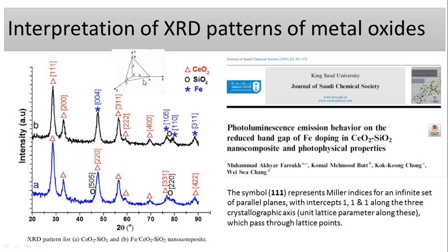The Miller indices represent the unit cell. This is the unit cell, and this is the central point of this unit cell. It is going to intercept with the X-axis, Y-axis, and Z-axis. How they are going to intercept with the three crystallographic axes — that is called the Miller indices, or the HKL value.